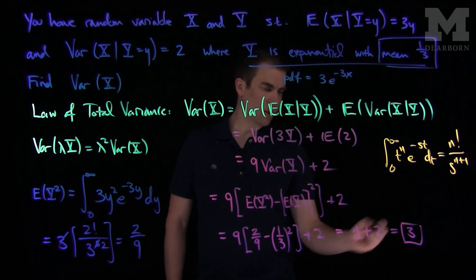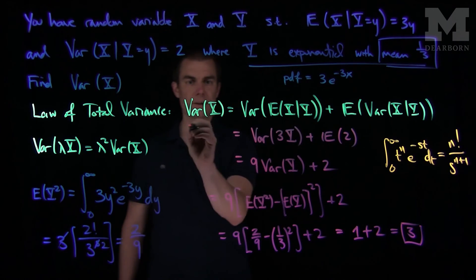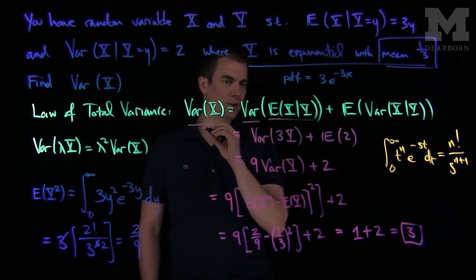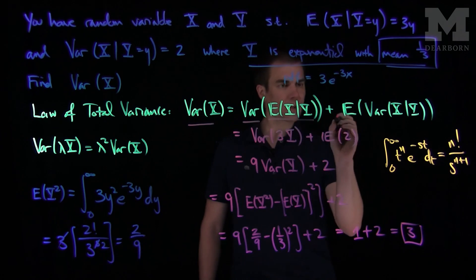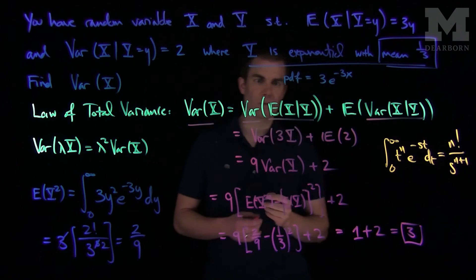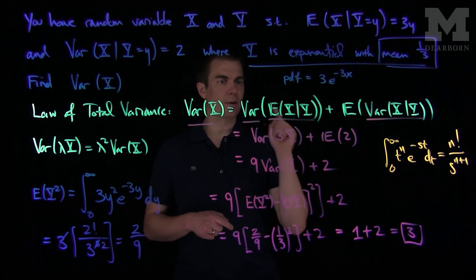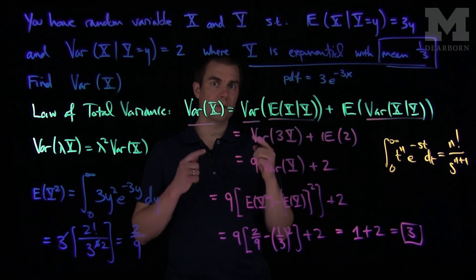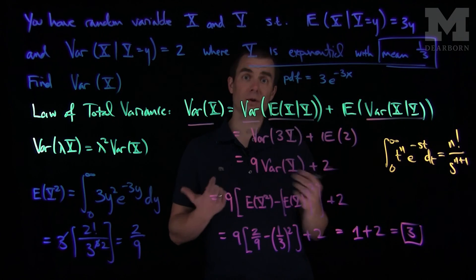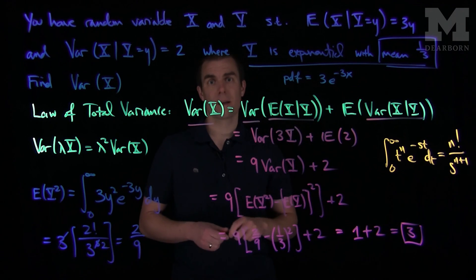The essential feature of this problem is that we need to use the law of total variance: the variance of x is the variance of the conditional expectation of x given y, plus the expected value of the conditional variance of x given y. Oftentimes it's easy to forget the second term, but when computing the variance with conditional information, you need to include the expected value of the conditional variance in addition to the variance of the conditional expected value. Thank you very much.